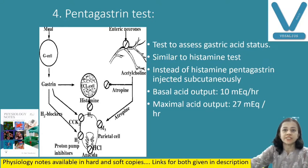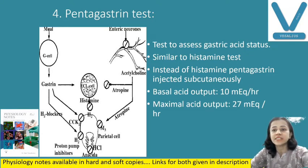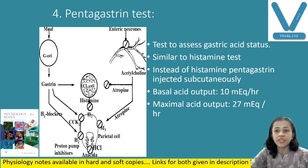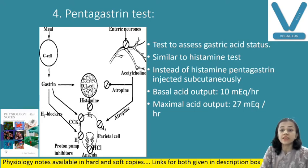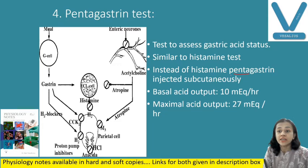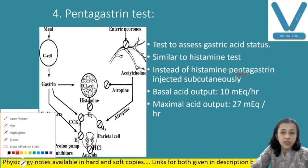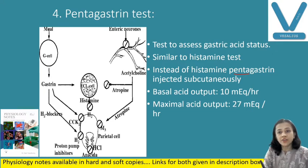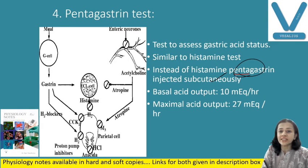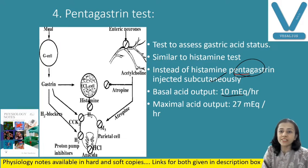Next is the pentagastrin test. This is a test to assess gastric acid secretion, same as histamine but instead of histamine we are injecting pentagastrin subcutaneously. Pentagastrin is a synthetic analog of gastrin. Here basal acid output is 10 milliequivalents per hour, and maximum acid output is 27 milliequivalents per hour.